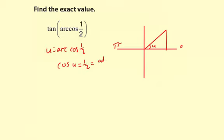And that's adjacent over hypotenuse. So that means the adjacent is 1, the hypotenuse is 2. We're going to solve for the third side.